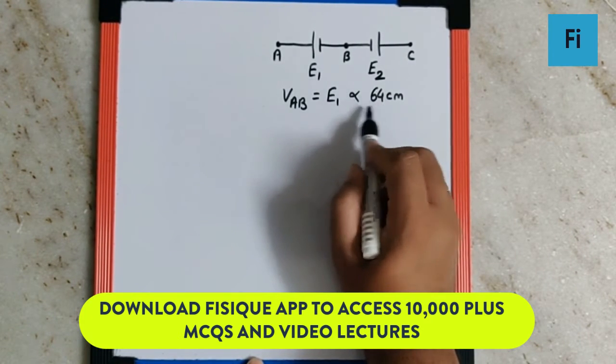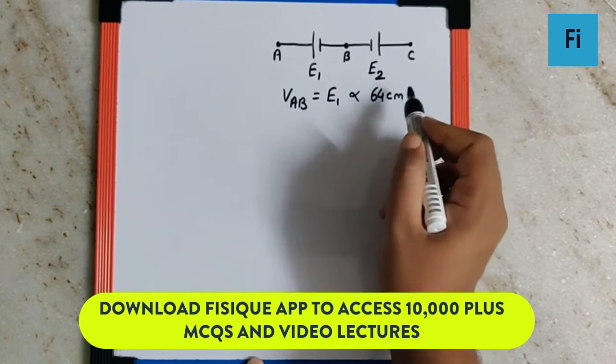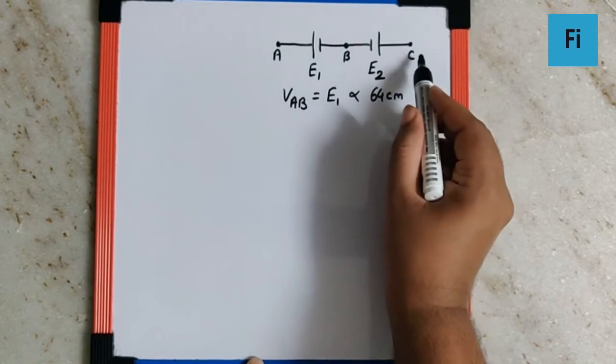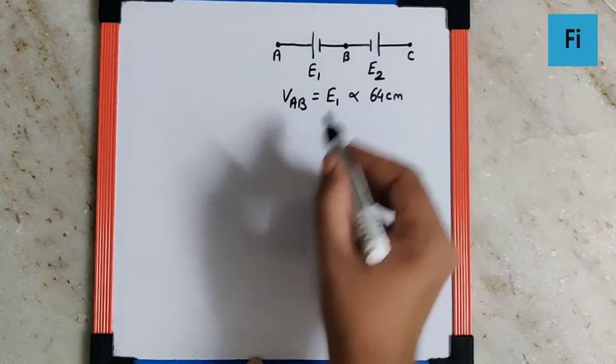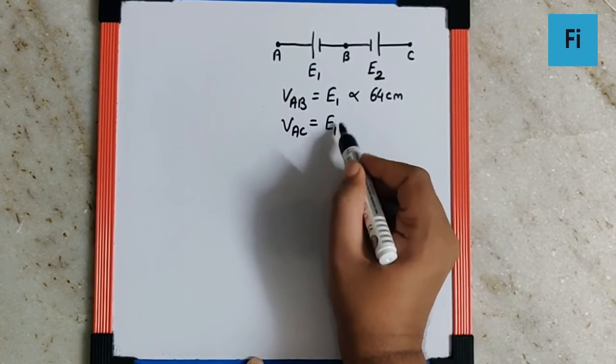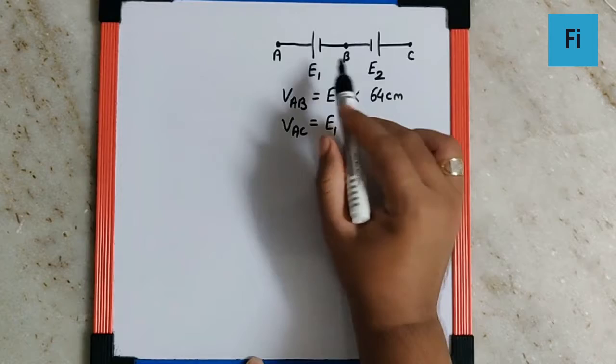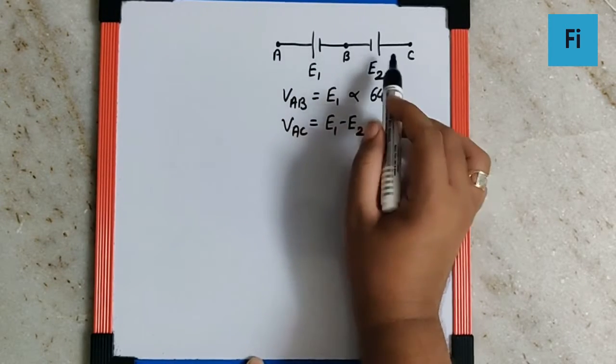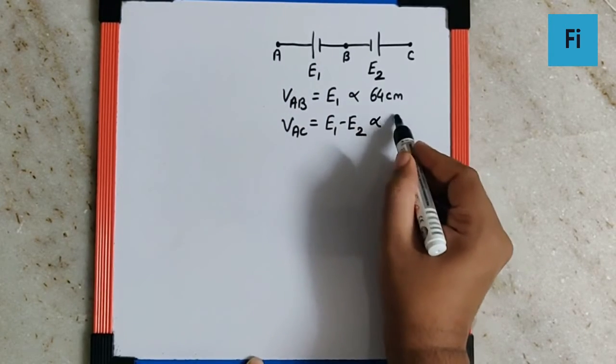By the principle of the potentiometer, the EMF is directly proportional to the balancing length. Now when the lid is moved to C, which means it is measured between A and C, that is VAC, we can say it is E1 minus E2 because the two cells are in difference mode, and that is balanced by 8 cm.